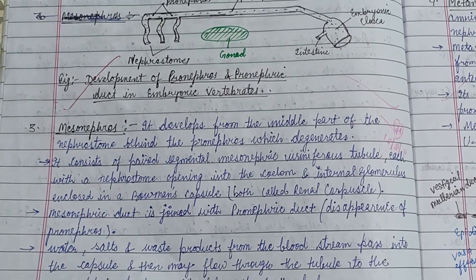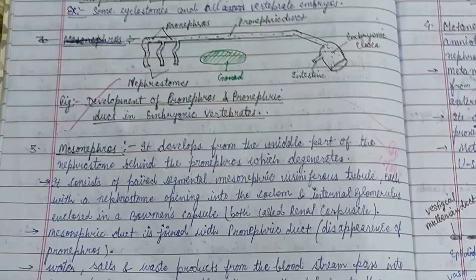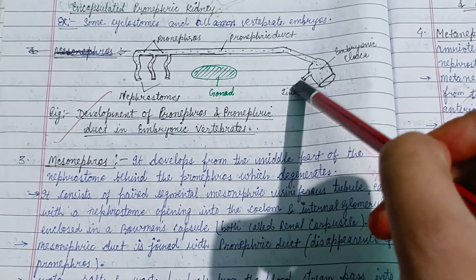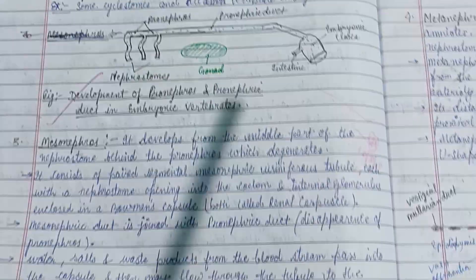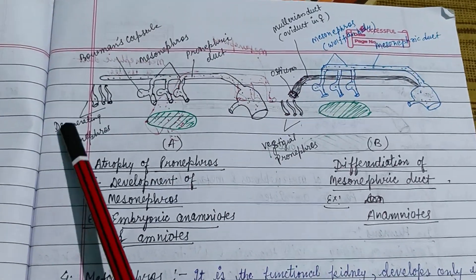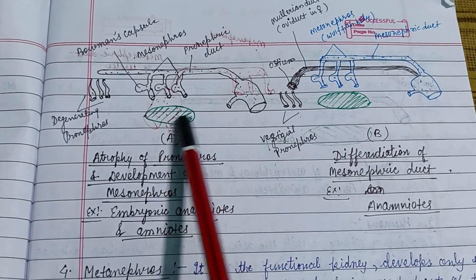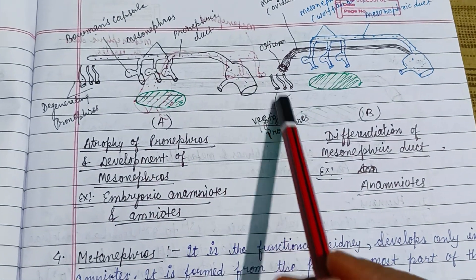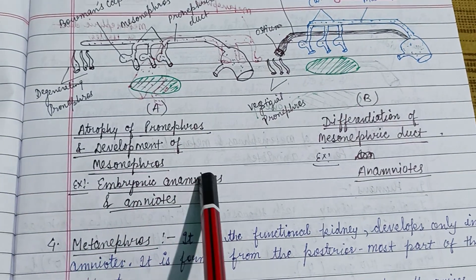Mesonephros develops from the middle part of the nephrostome, behind the pronephros, which then degenerates. In this picture there is the pronephros, nephrostomes, gonads, and the pronephric duct. The next picture shows degeneration of the pronephros and modification of the pronephros into the mesonephros, along with the pronephric duct and gonads, followed by atrophy of the pronephros and development of the mesonephros.